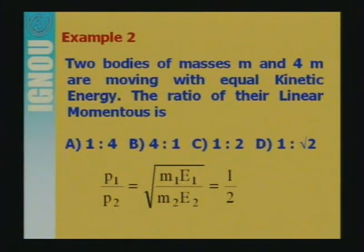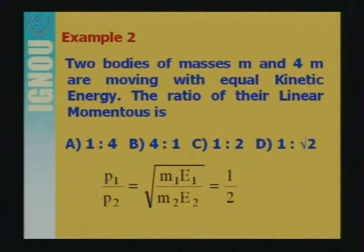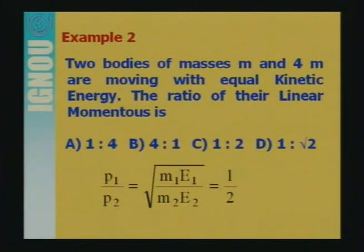Problem 2: Two bodies of masses m and 4m are moving with equal kinetic energies. Find the ratio of their linear momenta. Since p = √(2mKE), the ratio P₁/P₂ = √(M₁/M₂) when energies are equal. With M₁/M₂ = 1/4, taking the square root gives P₁/P₂ = 1/2.